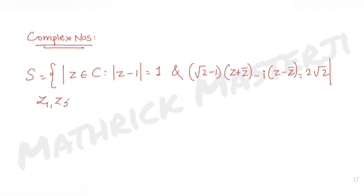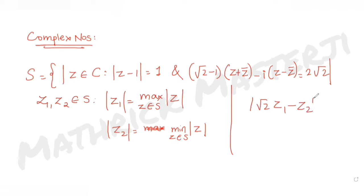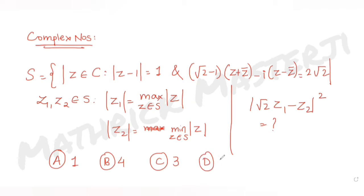It is also given that z₁ and z₂ belong to set S, where |z₁| is the maximum of |z| for z in S, and |z₂| is the minimum of |z| for z in S. The question asks us to find the value of |√2·z₁ - z₂|². The answer choices are 1, 4, 3, and 2.